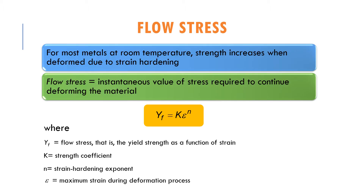Let us look into the flow stress. For most metals at room temperature, strength will increase when we deform it due to strain hardening. Flow stress is the instantaneous value of stress required to continue deforming the material. We can express it using the flow curve equation: YF equals k epsilon to the power n, where YF is the flow stress, k is the strength coefficient, n is the strain hardening exponent, and epsilon is the maximum strain during the deformation process.